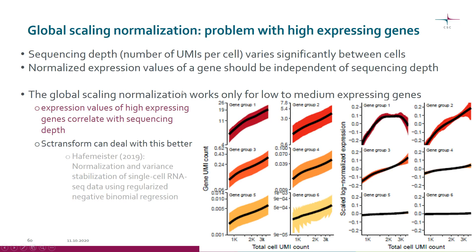It's good to realize that global scaling normalization doesn't work perfectly in every situation. It has a particular problem with high-expressing cells. As we know, the sequencing depth — in other words, the number of UMIs per cell — varies significantly between cells. After normalization, the gene expression values should be independent of the sequencing depth.